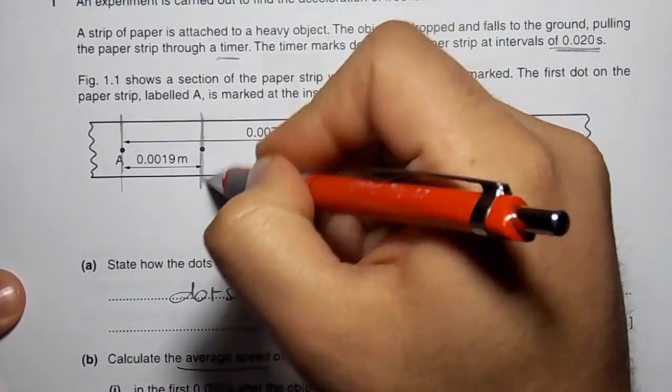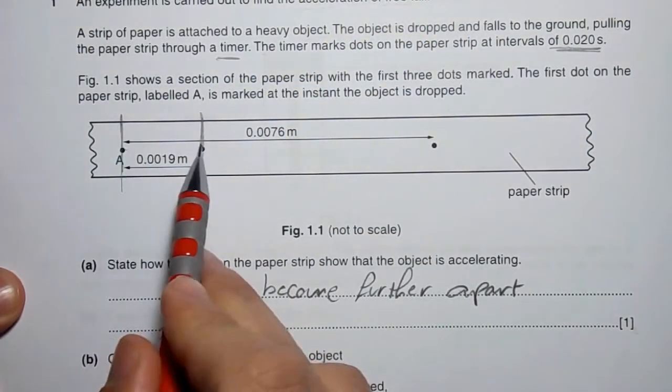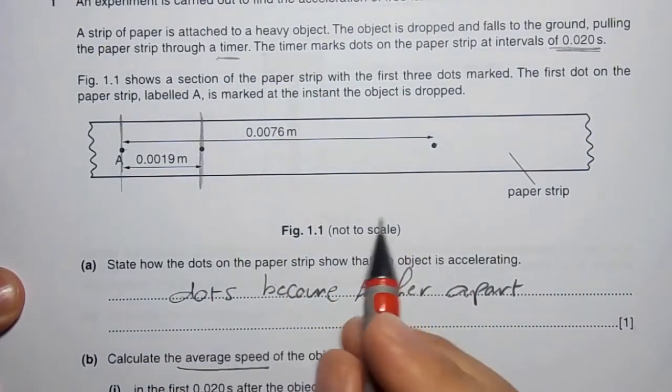The time between the dots is equal, but the distance is not equal.